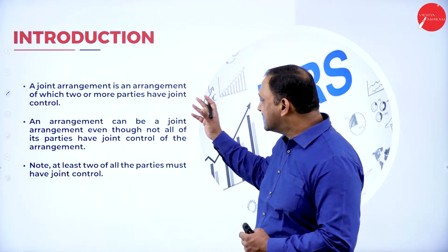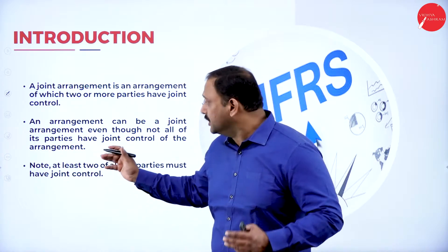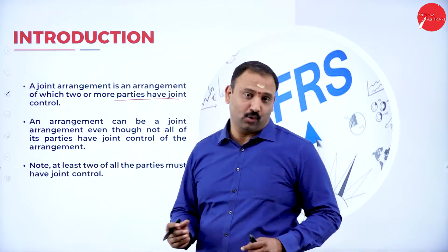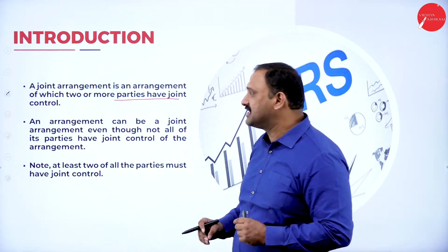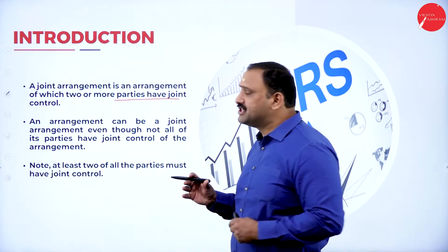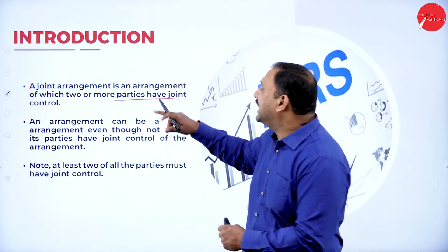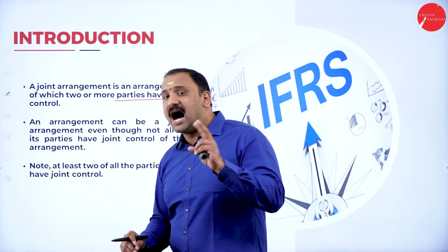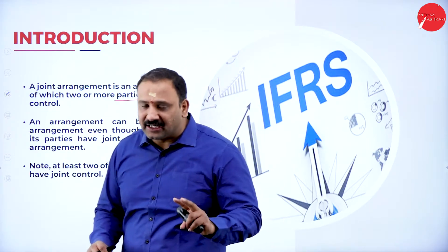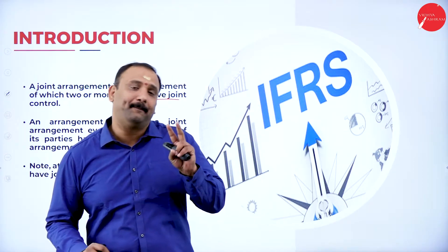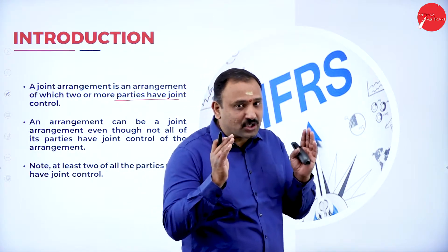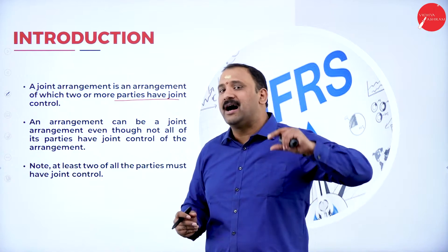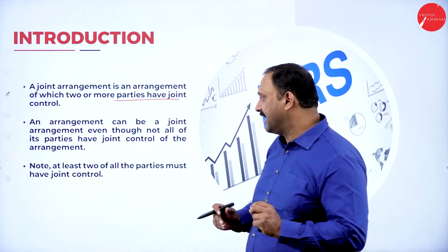A joint arrangement is an arrangement in which two or more parties have joint control. Two people are controlling a particular entity — that's going to be a very important statement.